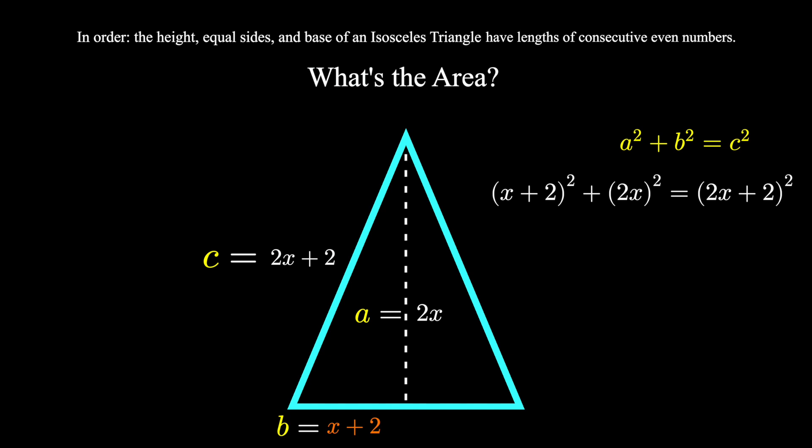Perform any distribution and start combining like terms. The constant cancels from both sides. We get x squared equals 4x, which, moving and factoring,